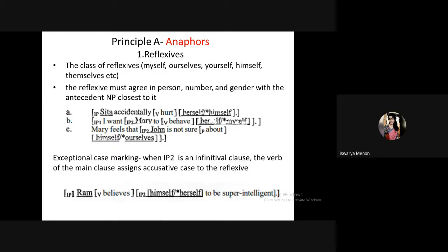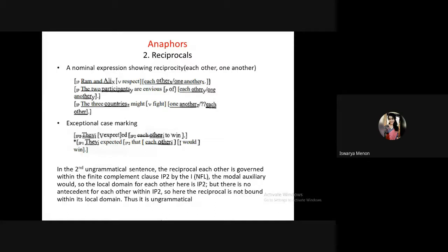Principle A of binding theory says an anaphora must be bound in its local domain — it must have an antecedent within the local domain. The reflexive pronoun must agree in number, person, and gender with that antecedent. In exceptional case marking contexts, such as 'Ram believes himself to be super intelligent,' the verb 'believes' assigns case to the reflexive 'himself.' Since 'himself' agrees in gender with Ram, it is correct.